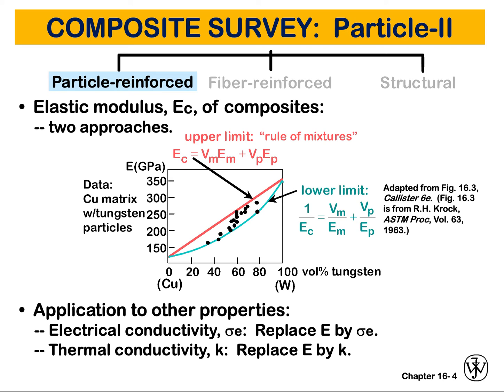This approach can be applied to other properties as well. We can find similar figures representing electrical conductivity, replacing E with sigma, and thermal conductivity k — measuring each as a function of the volume percent of tungsten as the dispersed particulate phase. Thank you for watching, until the next video.